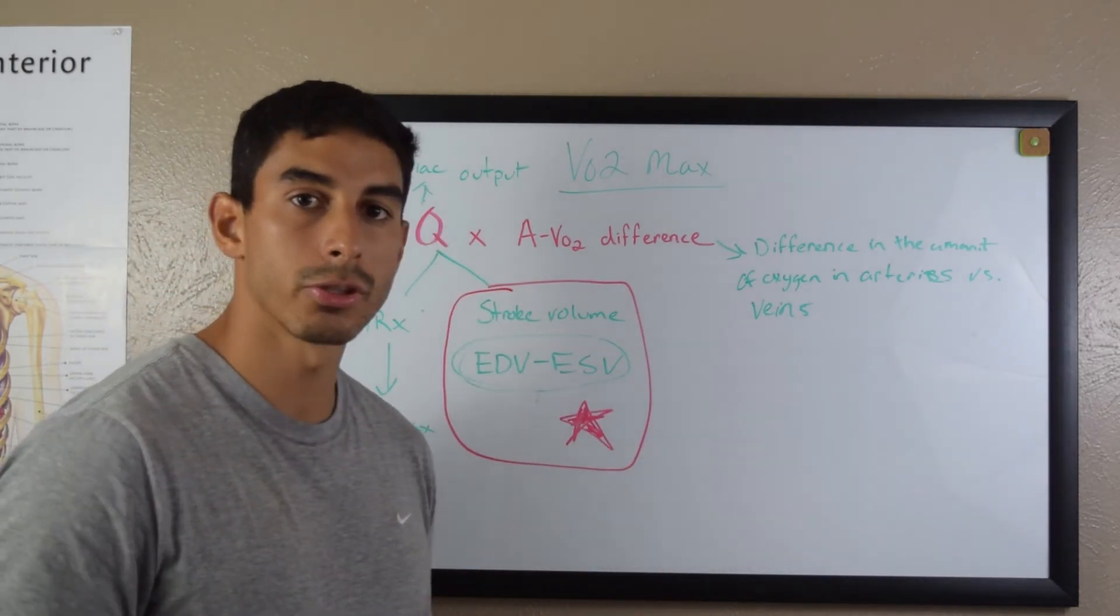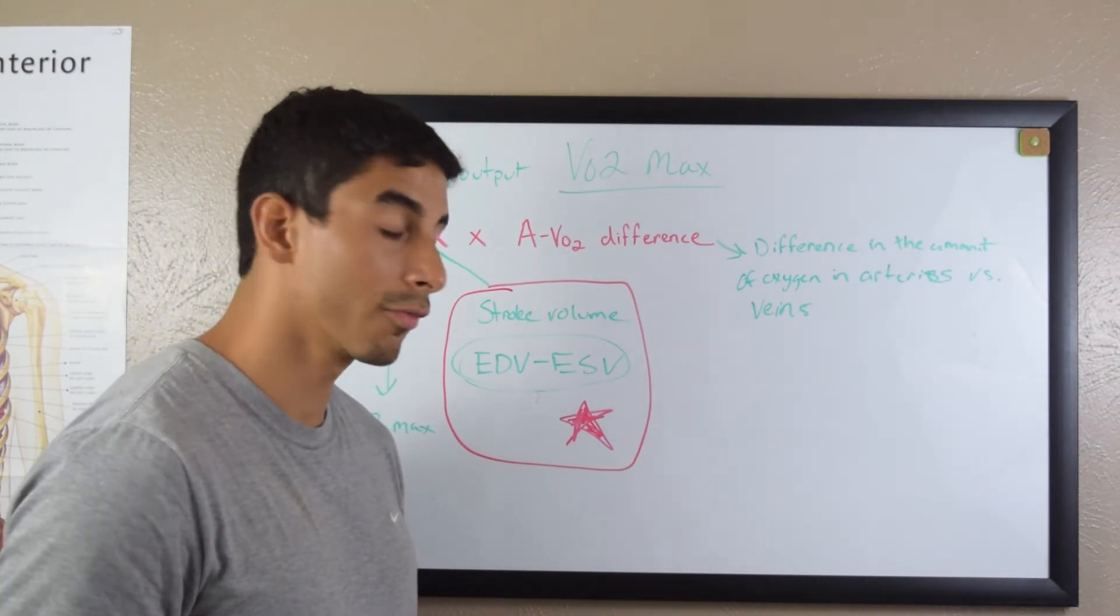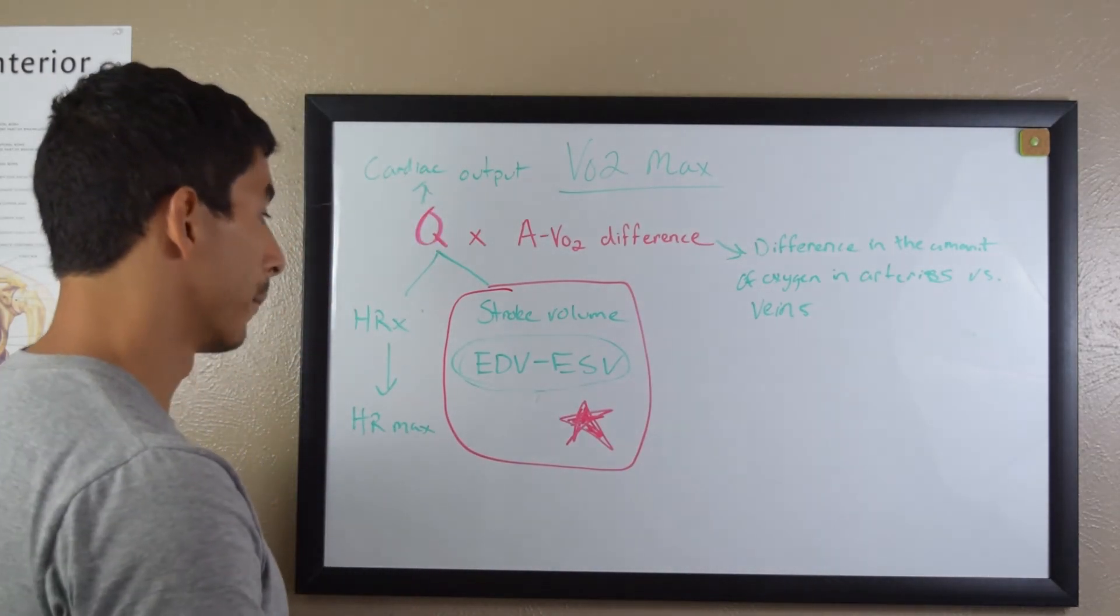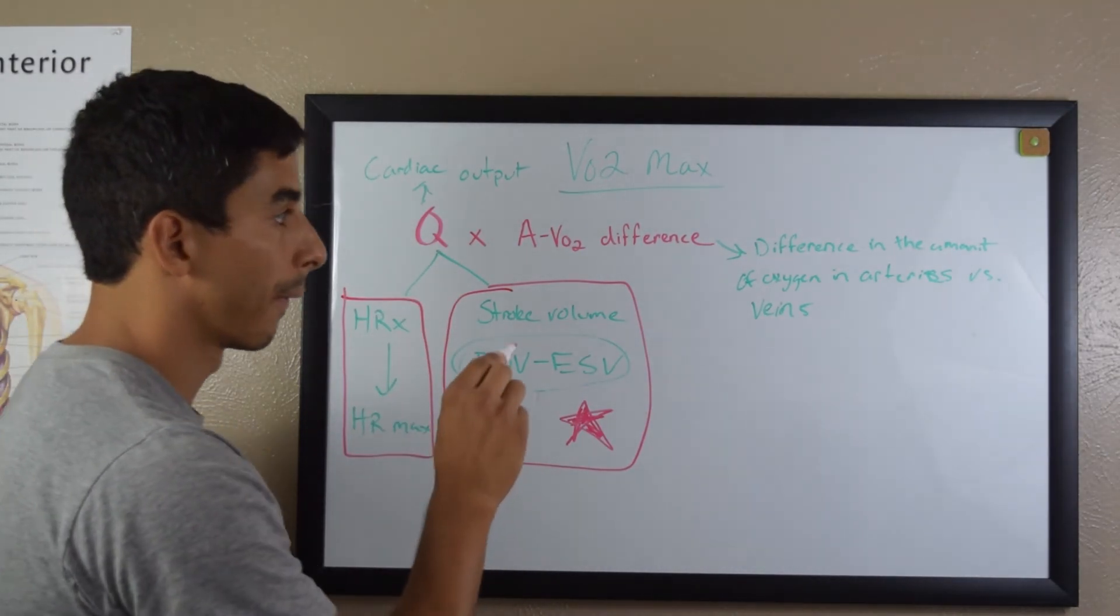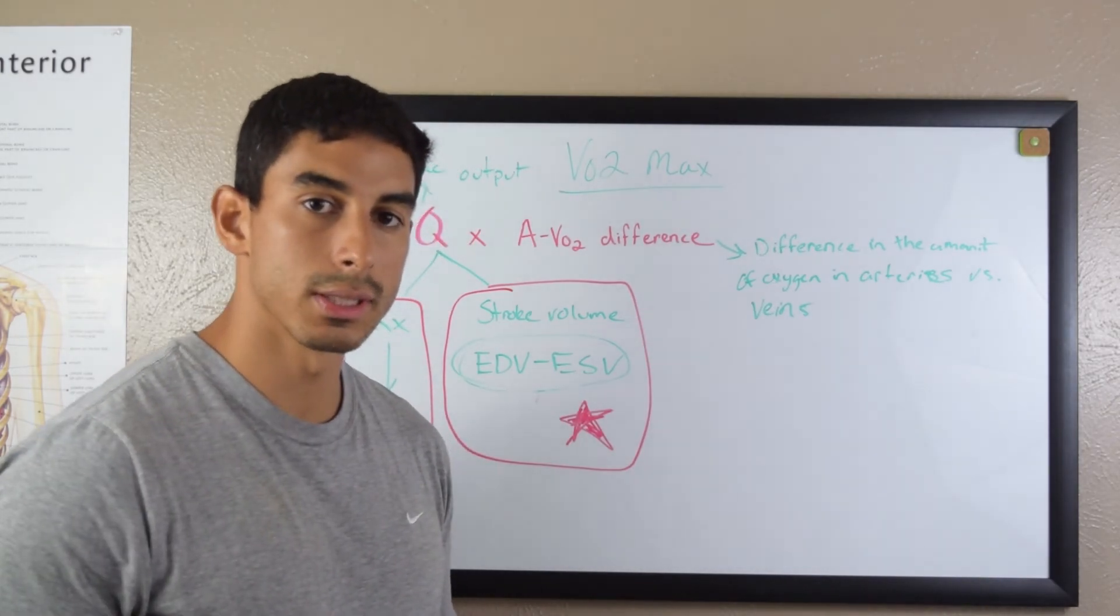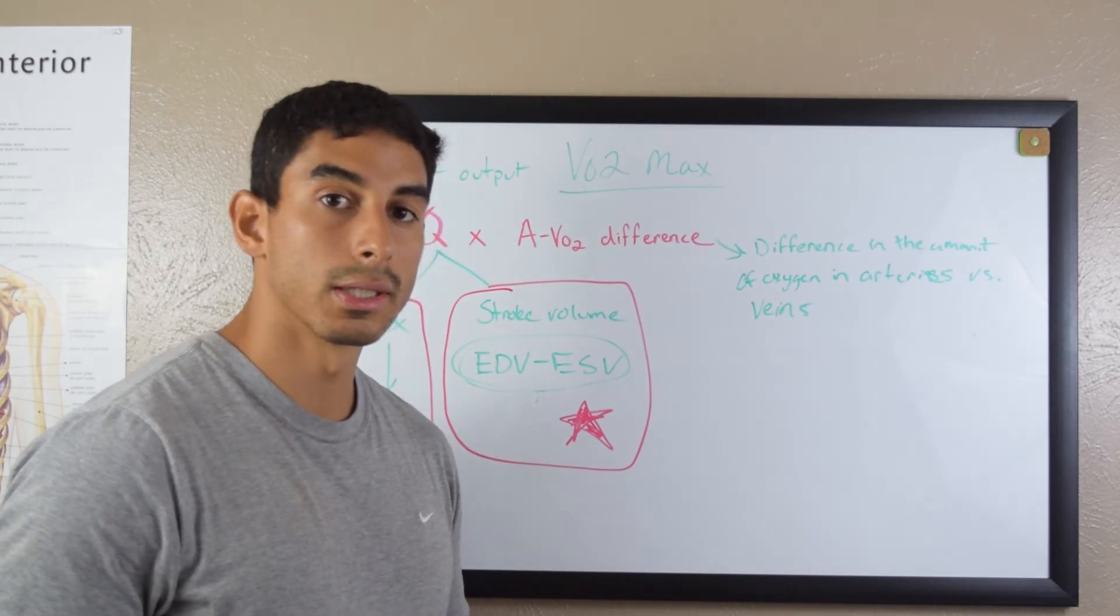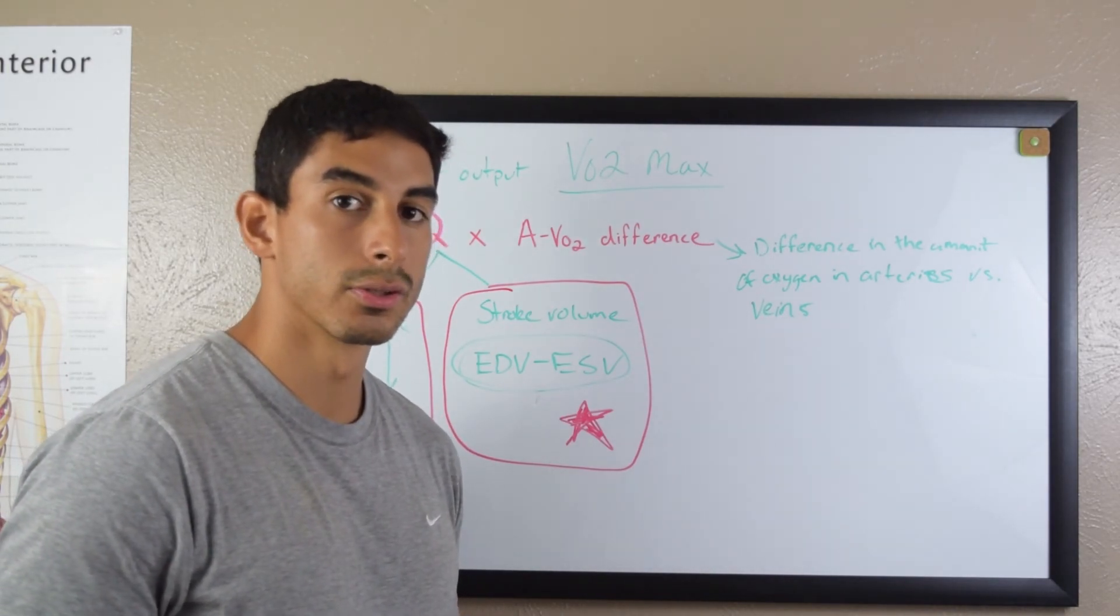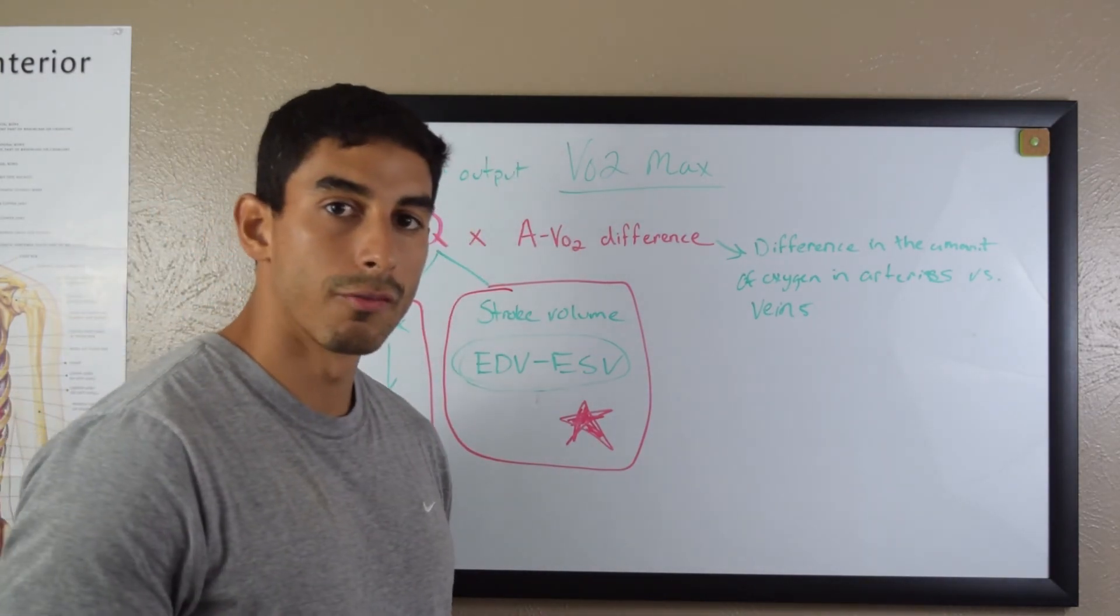So you may have a question on this and make sure you know that. Make sure you know the equation and the components of the equation. Cardiac output times AVO2 difference. Make sure you know that heart rate max does not change. And then make sure you know what AVO2 difference is. If you know all these components, you should be good on VO2 max.